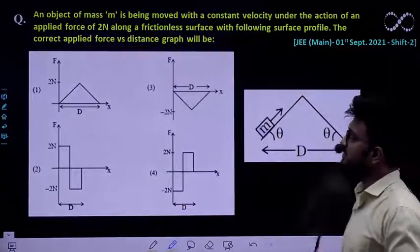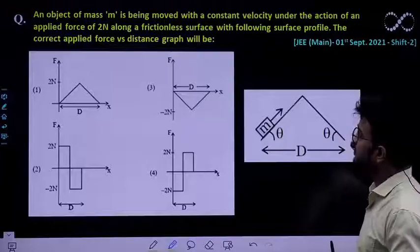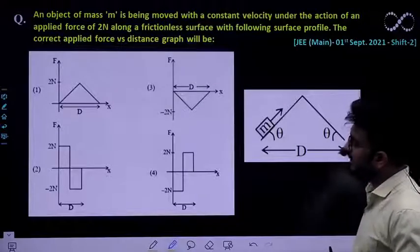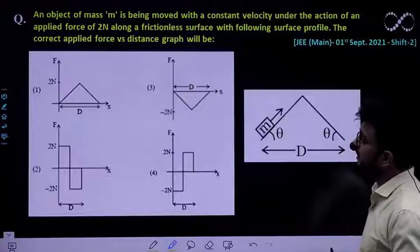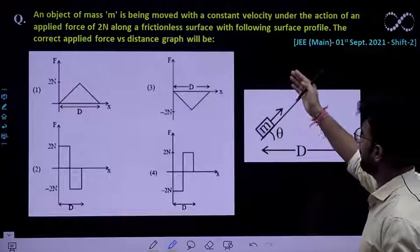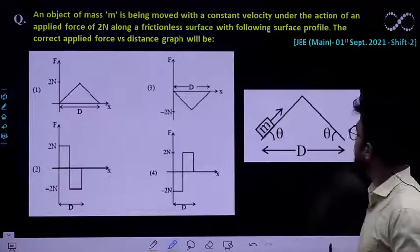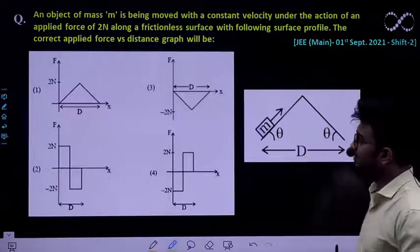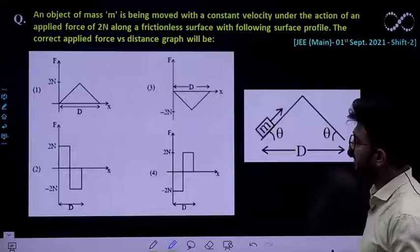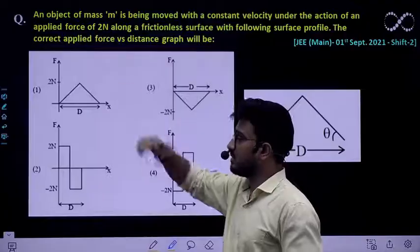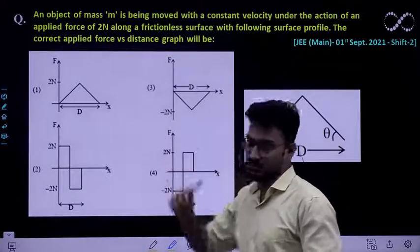Question says an object of mass small m is being moved with a constant velocity under the action of an applied force of 2 Newton along a frictionless surface with following surface profile. So this is the setup which has been given to you. The correct applied force versus the distance graph you need to choose is. So which one is the correct graph of force and displacement.